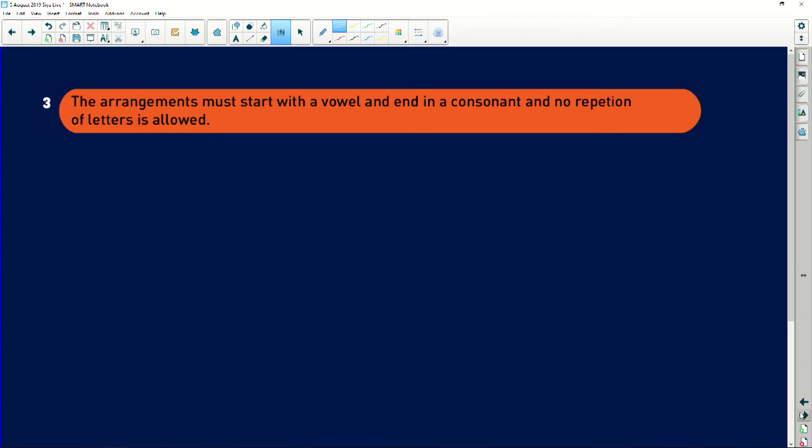Now, the last question for this will be, the arrangement must start with a vowel and end in a consonant and no repetition of letters is allowed. For a second my English ran away from me, because I was thinking to myself, what are vowels? But I remembered when I was in grade school they said A, E, I, O, U. So I'm looking for A, E, I, O, U. Those are my vowels. And then any other letter will be called a consonant in this instance.